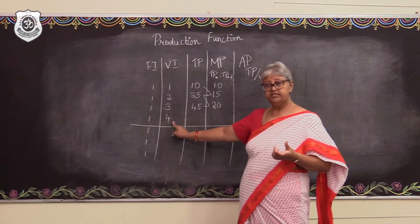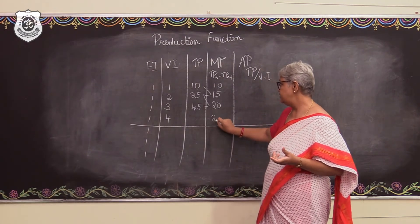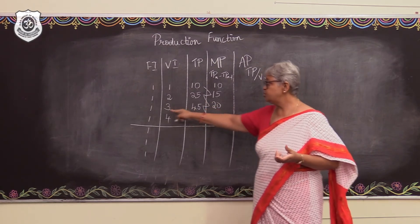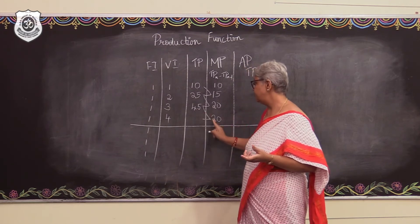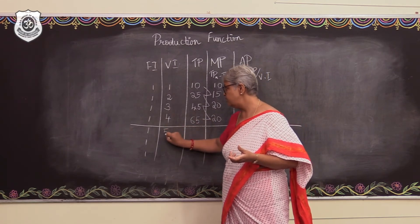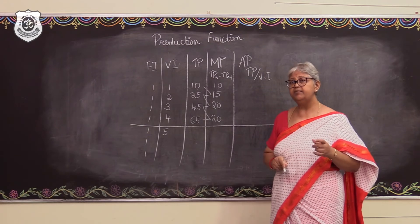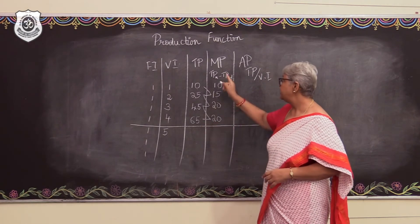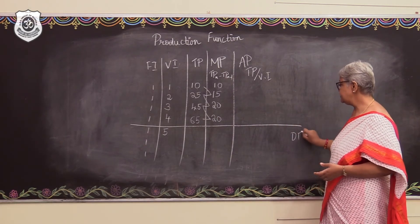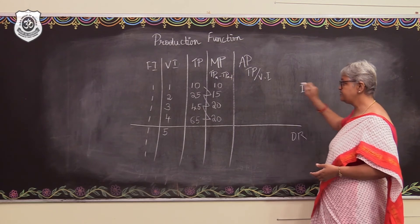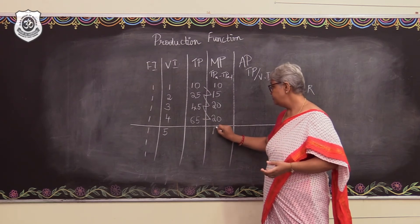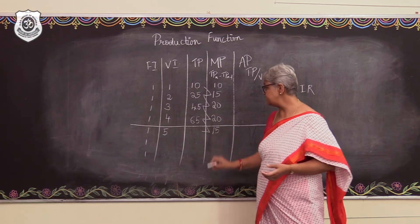The fourth laborer contributes 20 again, making the total product 45 plus 20, which equals 65. This represents the ideal ratio of variable input to fixed input. Adding one more unit of variable input, the marginal product starts to fall due to decreasing returns. The contribution made by the fifth person is 15.